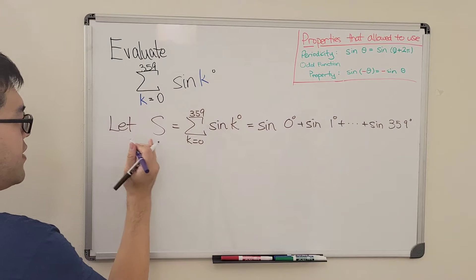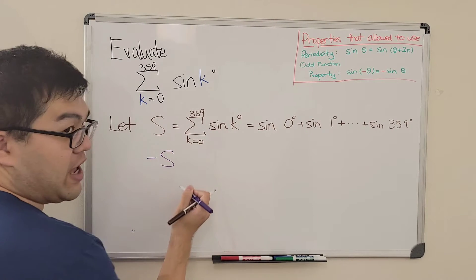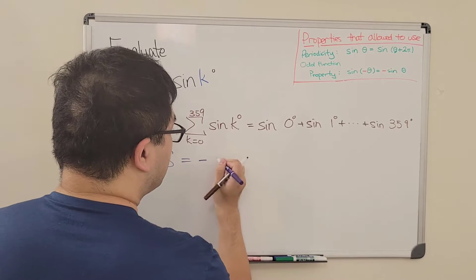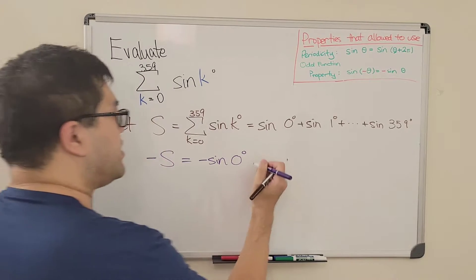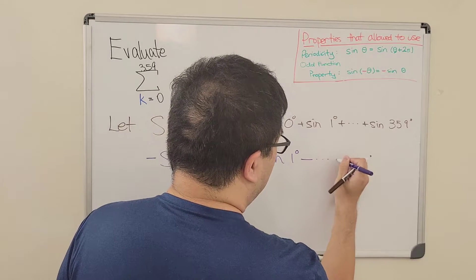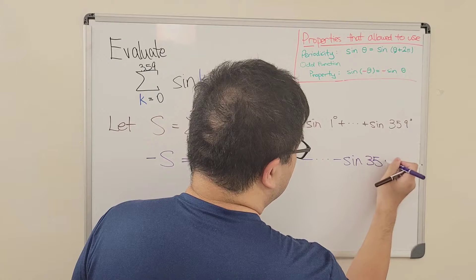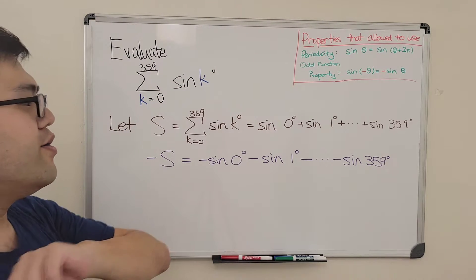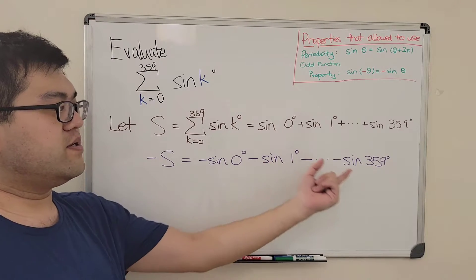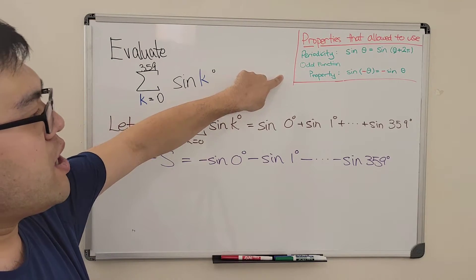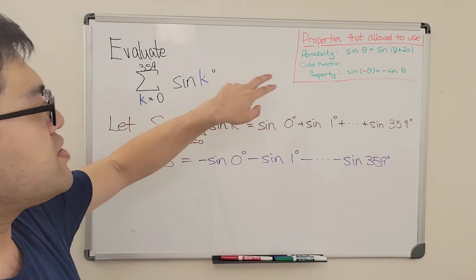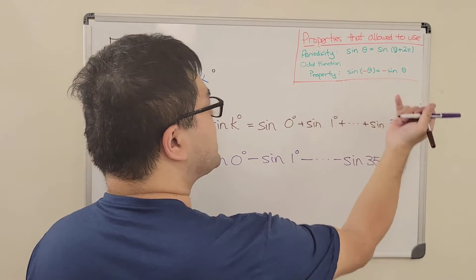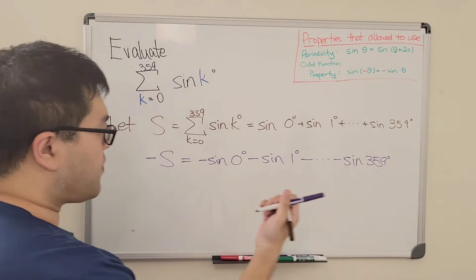Our next step is to multiply both sides by negative 1. On the left-hand side we get negative S, and on the right-hand side all terms become negative, giving us negative sine of 0 degrees minus sine of 1 degree, and so on, up to negative sine of 359 degrees. Now each term on the right is negative of sine, so we can apply the odd function property from right to left.